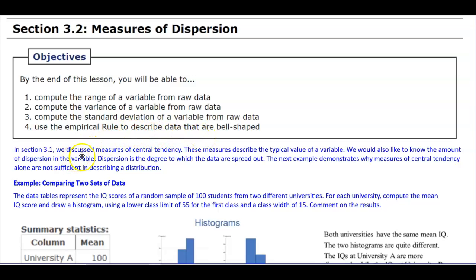In section 3.1, we discussed measures of central tendency. These measures describe the typical value of a variable. We would also like to know the amount of dispersion in the variable. Dispersion is the degree to which the data are spread out. The next example demonstrates why measures of central tendency alone are not sufficient in describing a distribution.